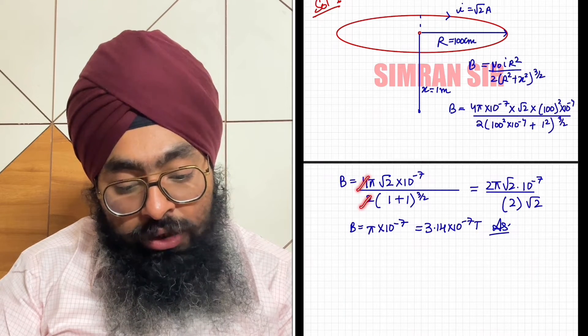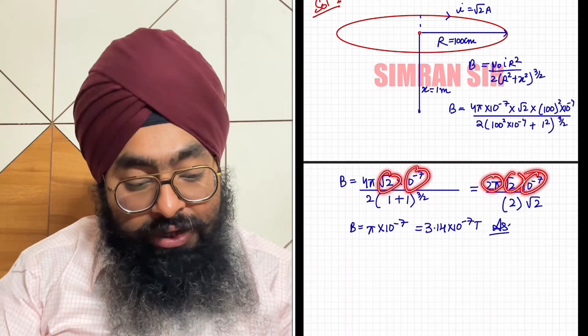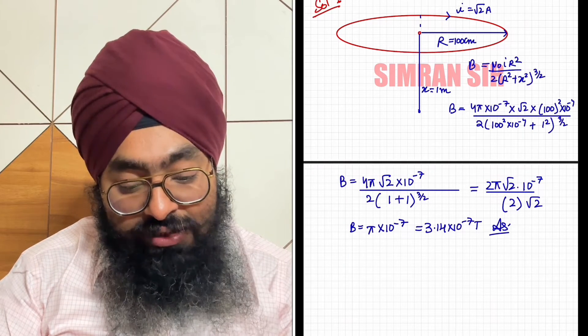Now solving this, 2 and 4 cancel. So upper 2π remains. Root 2 as it is comes. 10^(-7) as it is comes.